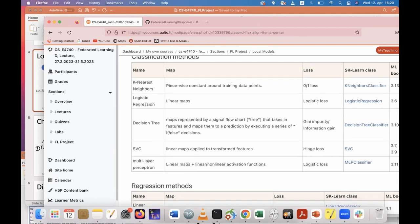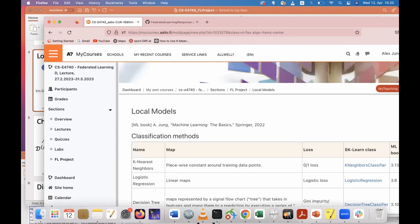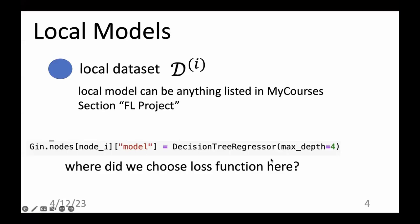Do you have any questions at this point? One example model could be a decision tree regressor, which we also use in the current assignment. You must use only models from that list. Is there any specific wish for a model that is not in that list?